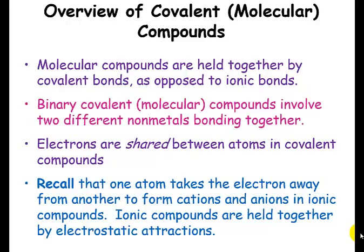In covalent bonds, electrons are shared between atoms. That's the big difference — nonmetals are going to share electrons with each other. In contrast, in ionic compounds, the cation loses an electron and the anion gains an electron, which creates charged ions held together with electrostatic attractions. In covalent bonds, we don't have any charges at all — nonmetals are just sharing electrons with each other.